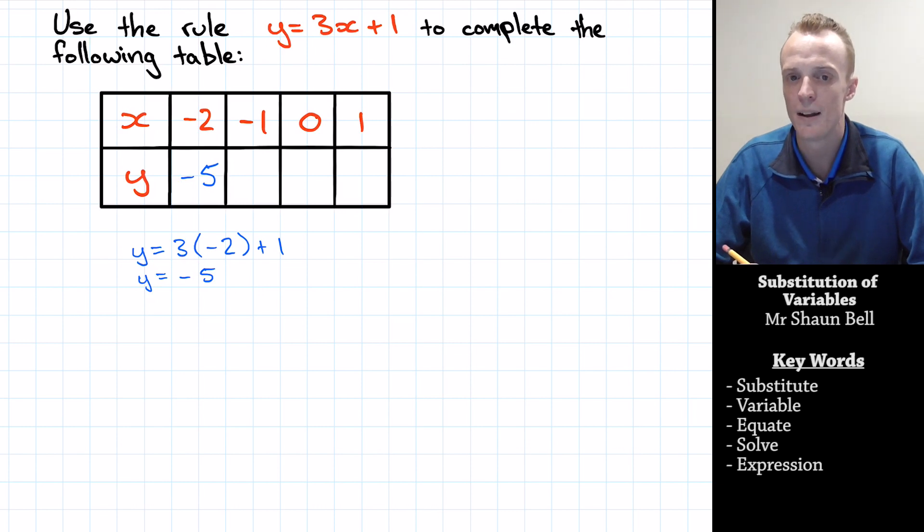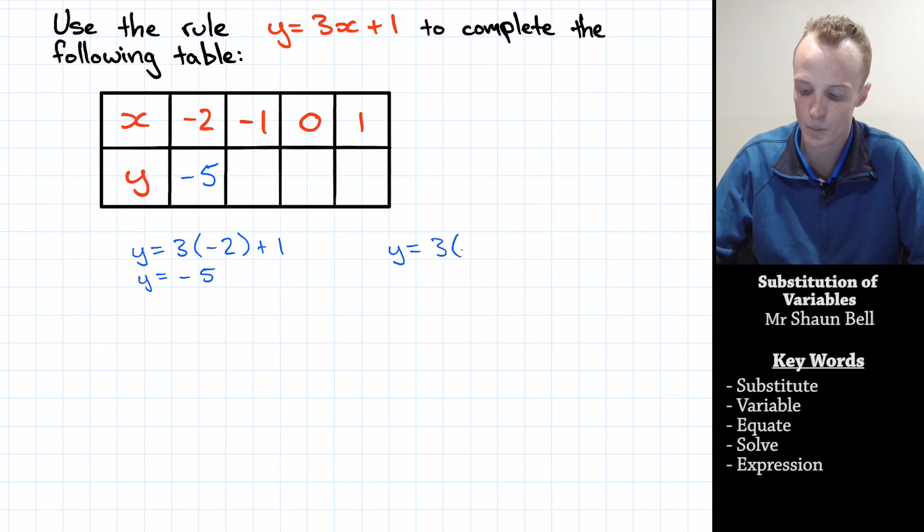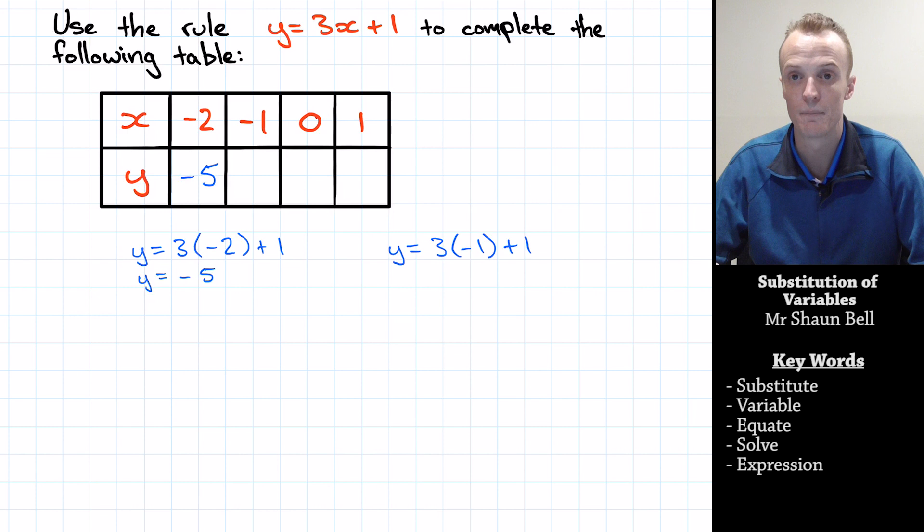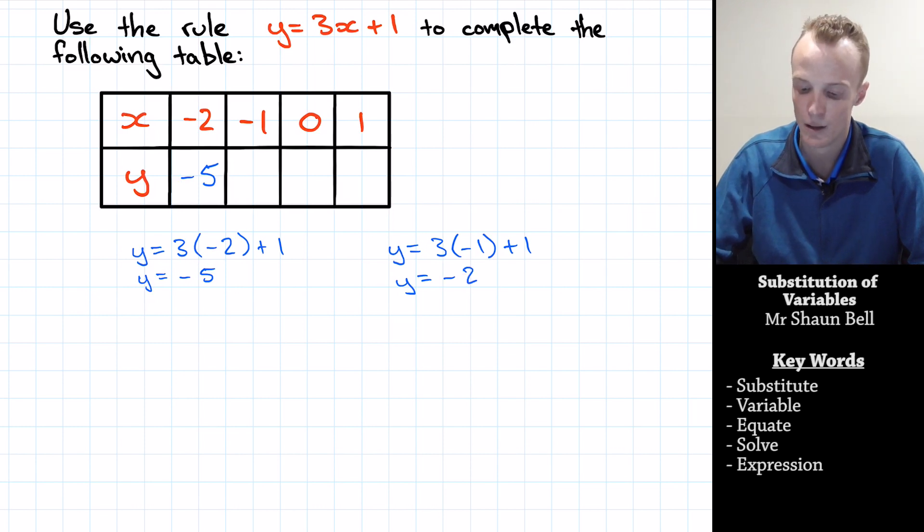But what about when x is negative 1? Well, we do the same process. We continue writing the statement until we come across that x. We replace the x with negative 1 and we continue writing the statement. Now y here is going to equal 3 times negative 1 which is negative 3 plus 1 which will be negative 2. So when x is negative 1, y will equal negative 2.